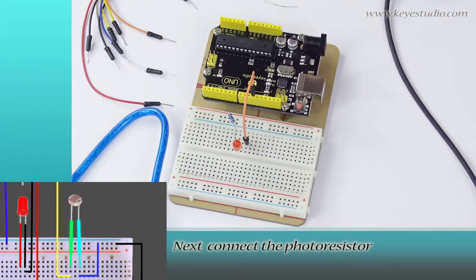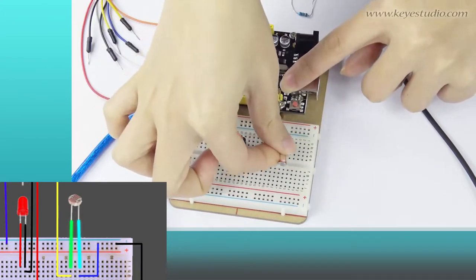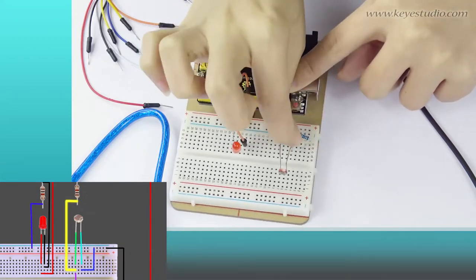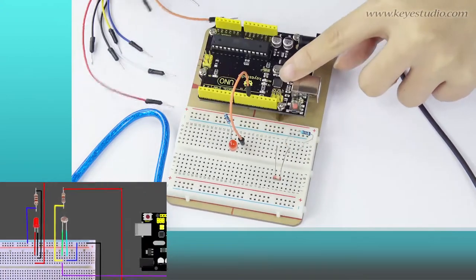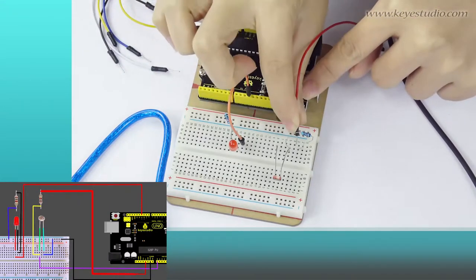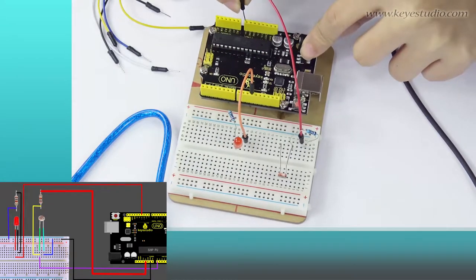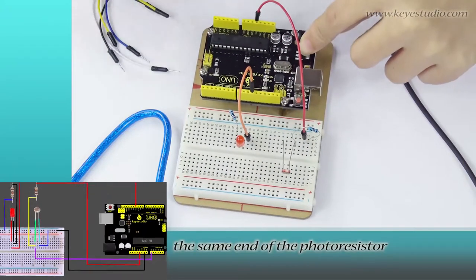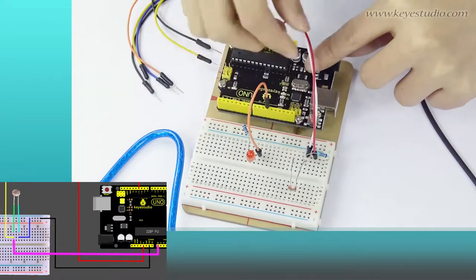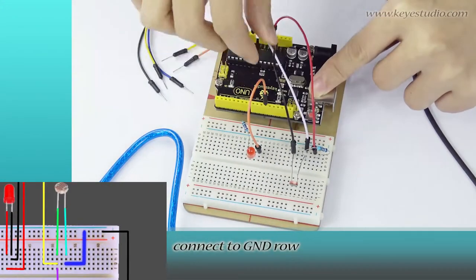Next, connect the photoresistor. Plug one end to a 10K ohm resistor and connect the resistor to 5V. The same end of the photoresistor connect to A0. The other end of the photoresistor connect to ground row.